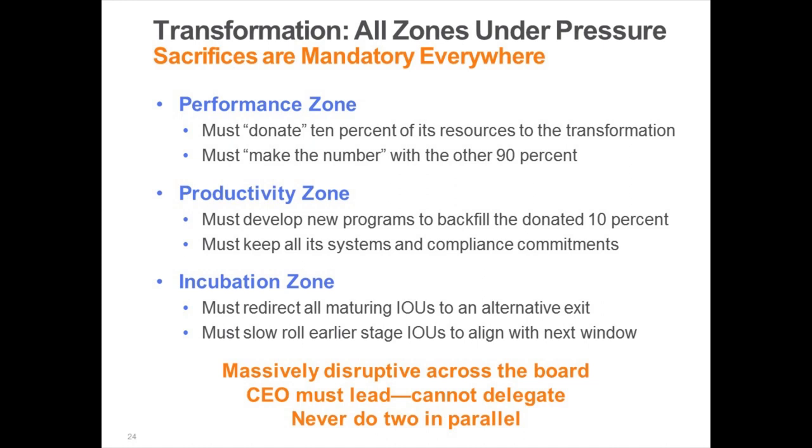The productivity zone also has to do a lot of systems efficiency work to pull out resources in order to allocate them to the transformation zone. And then the incubation zone has to understand: we've got one in the hopper in the transformation zone, so we can't take a second one. Wherever you are in your life cycle, you have to not consider one of the other exit options, because we cannot have two in the hopper at the same time.